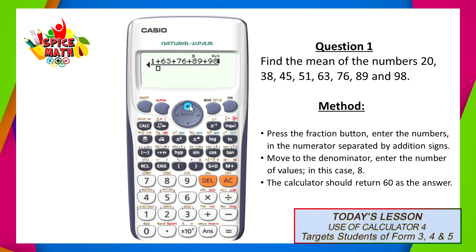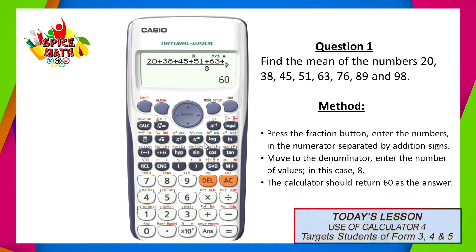Following this, we would move our cursor down to the denominator, and we'd enter the number of values. In this case, we have eight values in the question, so we would enter the number eight. Once you've checked and ensured that all values have been entered correctly, all that's left to do is hit the equal sign, and this would return a value of 60. So that means the mean, or the average, of the set of numbers has a value of 60.